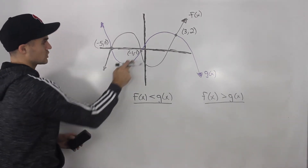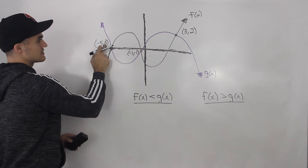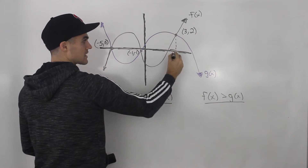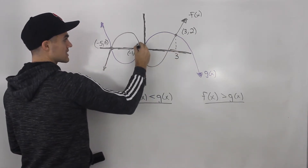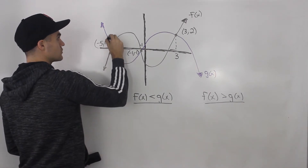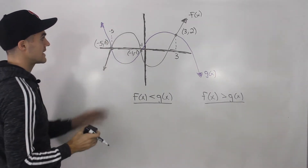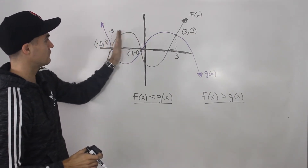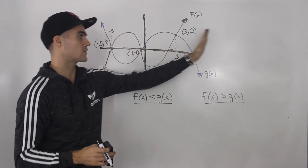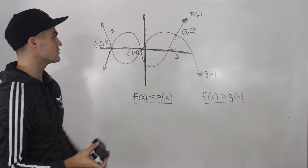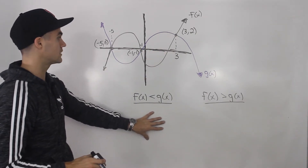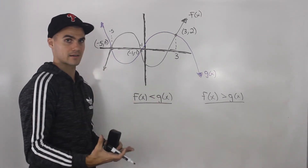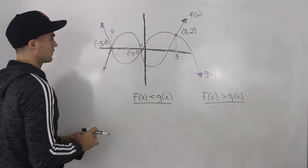With the points of intersection, the y-values are not really important — the zero, negative one, the two. What's important are the x-values: x equals three, x equals negative one, and x equals negative five. Those define the intervals you have to look at: from negative infinity to negative five, from negative five to negative one, from negative one to three, and from three to positive infinity. Whenever you're answering an inequality question, the answer is always in terms of x-values.